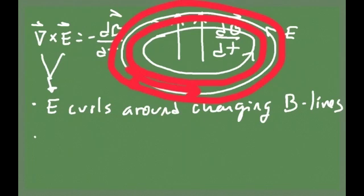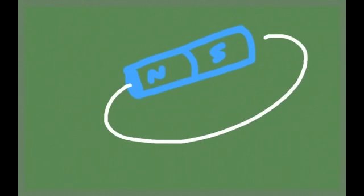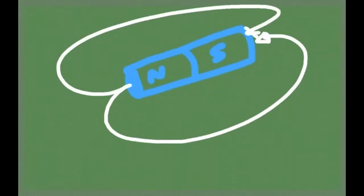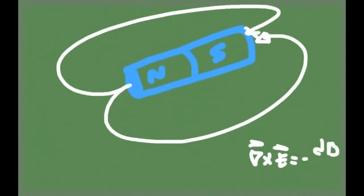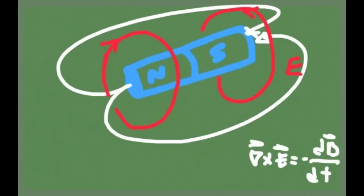So this equation implies that if you have a magnet moving through space — with a north pole and a south pole — we know the magnet has magnetic field lines that come out of the north pole and go towards the south pole. But Faraday's equation, written in terms of the electric and magnetic field, tells you that there must also be electric field lines around this magnet. Those electric field lines are the ones responsible for driving the current in a conductor placed in the neighborhood of this moving magnet.